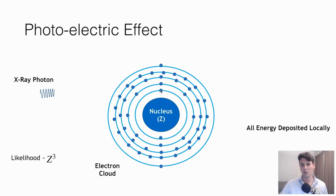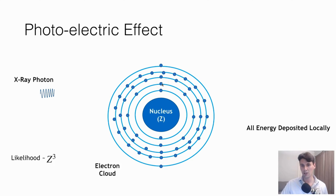If you remember from chemistry, we have different shells where the electrons reside. The shells that are closer have lower energy, and the shells further away have higher energy — though they're not necessarily physically further away. When an electron is removed from an inner shell, there's a vacancy, and then an outer shell electron will move to a more stable, lower energy configuration. It moves from an outer shell to an inner shell, and in order to conserve energy, it emits a photon.